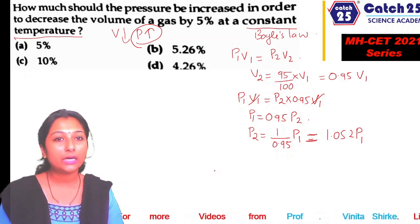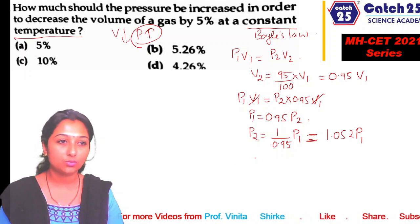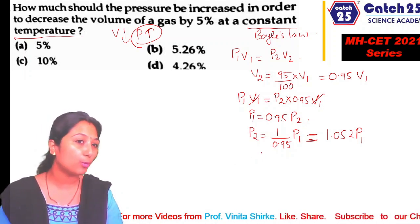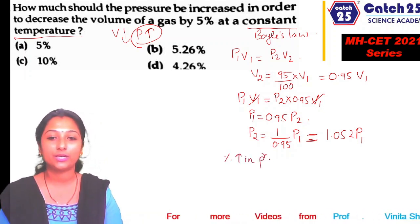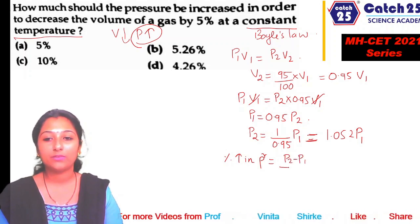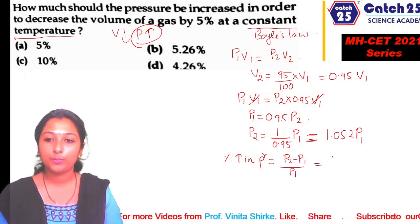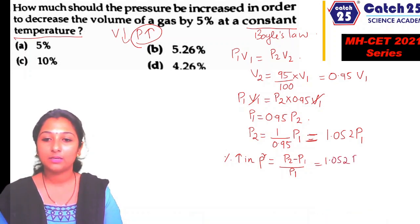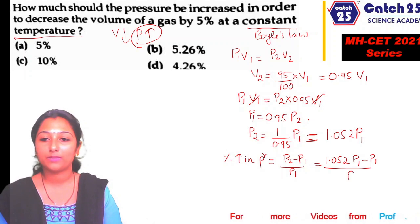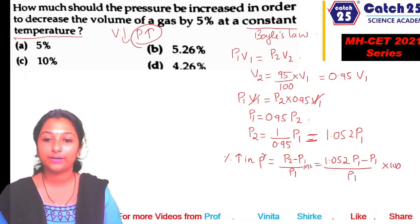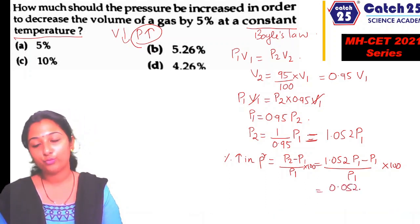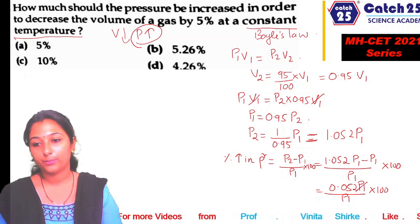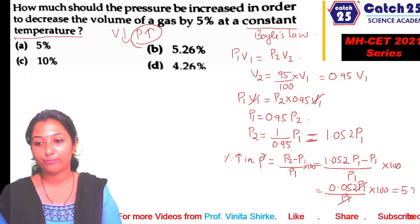Now we need to calculate the percent increase in pressure. The formula is: percent increase = (P2 - P1)/P1 × 100. P2 is 1.052·P1, so (1.052·P1 - P1)/P1 × 100 = 0.052 × 100 = 5.2 percent.